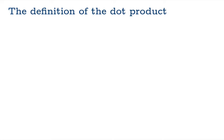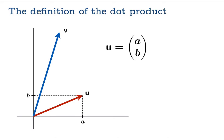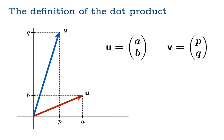The definition is pretty simple. Suppose you have a pair of vectors u and v, with components a and b for u, and components p and q for v. We define the dot product of u and v to equal ap plus bq. So you take like components, multiply them together, and then add the resulting products.